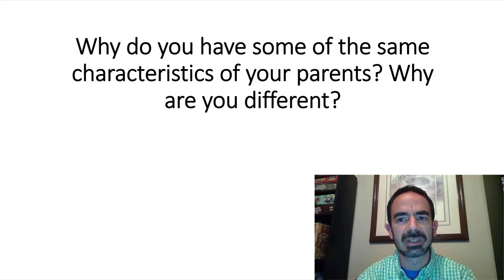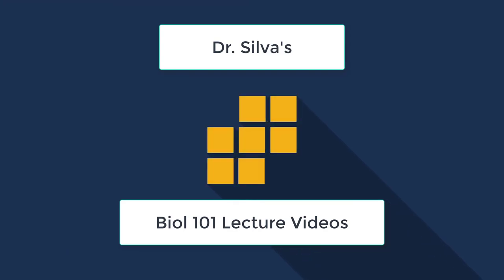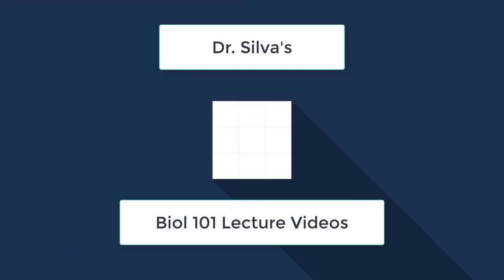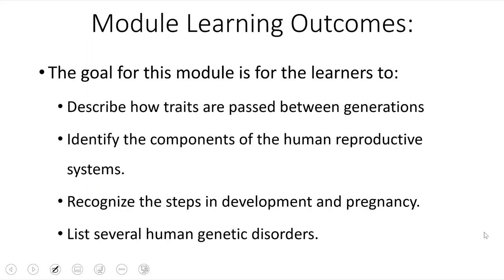Why do you have some of the same characteristics as your parents? And why are you different? That's what we'll be talking about in this module. This information comes from chapter 8 of our textbook. The goals for the learners are that they'll be able to describe how traits are passed between generations, define the components of the human reproductive system, recognize the steps in development and pregnancy, and list several human genetic disorders.